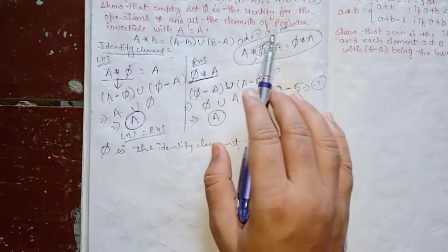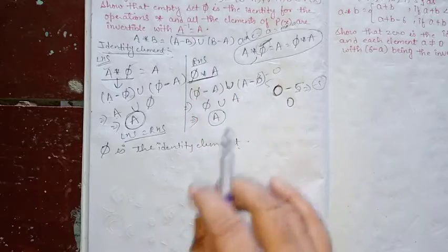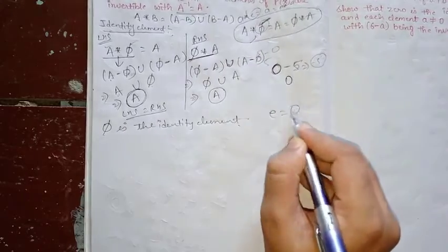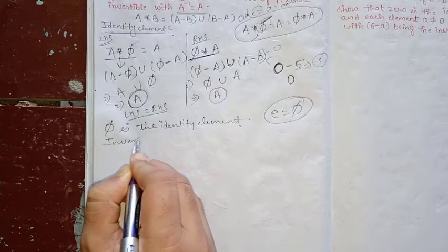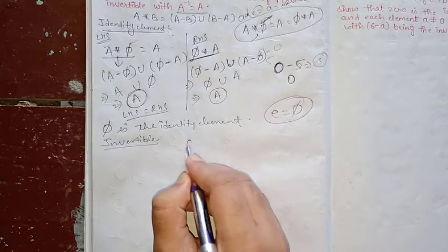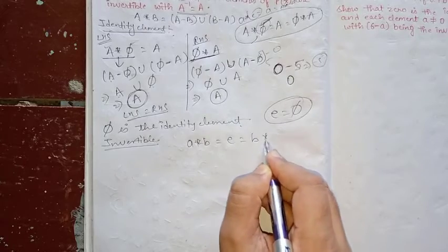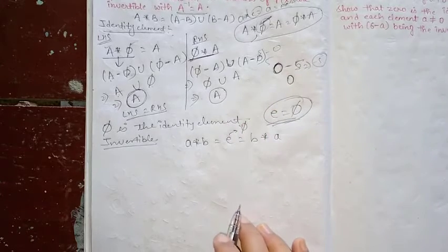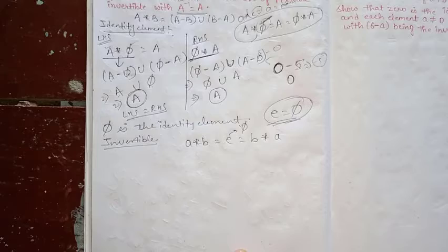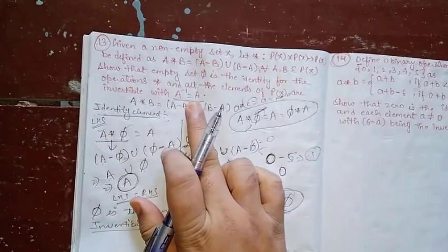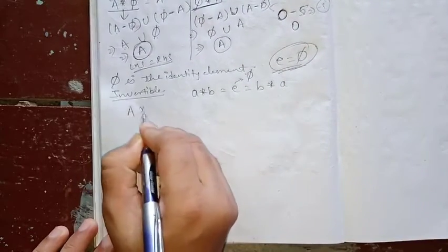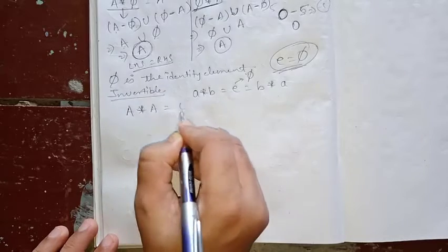Now for the second part: all elements of P(S) are invertible with A inverse equal to A. For invertibility, we need A * B equal to E and B * A equal to E, where E is the identity Phi. So we need to show A * A equals Phi.